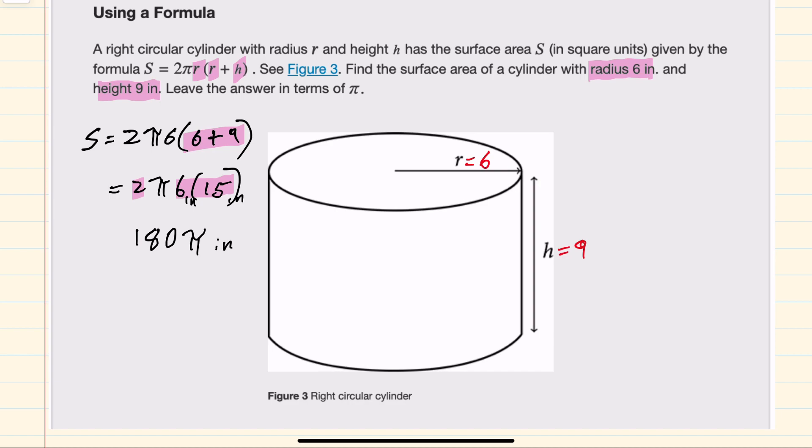so our units would be inches squared. So our surface area is 180π square inches.